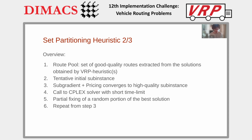During the local search, every time the algorithm finds a promising solution, it can add the routes of that solution to the route pool, for them to be considered later in the set partitioning phase. Then the CFT-like scheme starts: an initial sub-instance is formed with a few thousand routes, and a subgradient plus pricing procedure identical to the one in the original CFT paper is used to select a high-quality sub-instance in a very fast fashion.